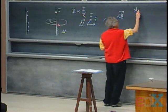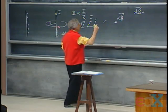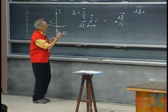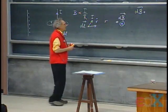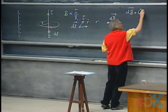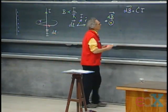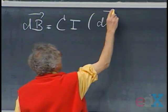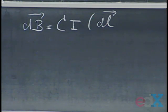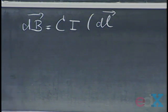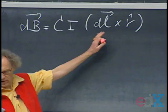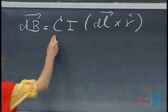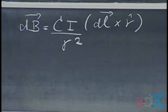The small contribution dB to the magnetic field from a little current element: in this case it would be into the blackboard because of the right-hand corkscrew rule. It is some constant proportional to the current, and proportional to the length of that element DL — if it's longer, the magnetic field is larger. To get the direction right, perpendicular to the blackboard, you take the cross product with the unit vector R̂. And then inversely proportional to R squared. That's the key.